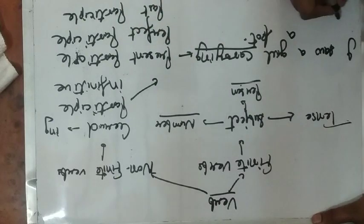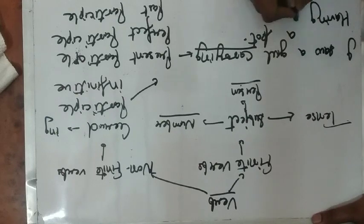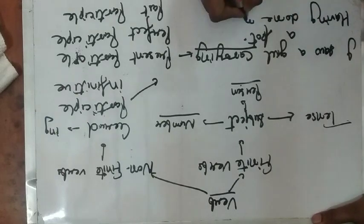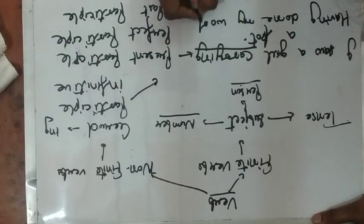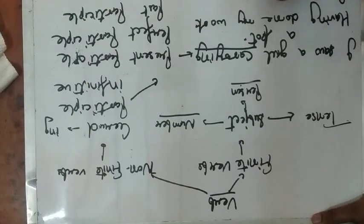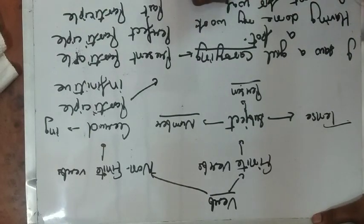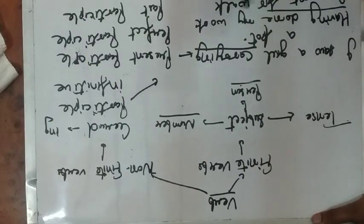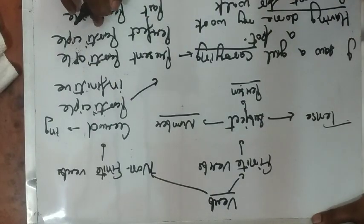Perfect participle. Having done my work, I went for a walk. 'Having done' here is a perfect participle and it is a non-finite word.